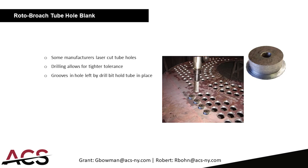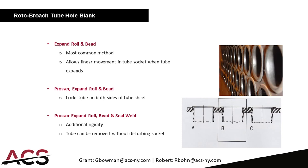Here we have a picture of tubes being rolled and expanded. Option A is the most basic — expanded roll and bead. Option B is the proser expand, roll, and bead, which locks the tube on both sides of the tube sheet. Finally, the third option is the proser expand, roll, bead, and seal weld for additional rigidity. One application where you'd weld the tubes on both sides is glycol systems, because glycol is a very thin liquid and can find its way through seams between the tube and tube sheet, so welding keeps it from leaking.